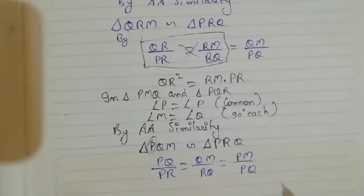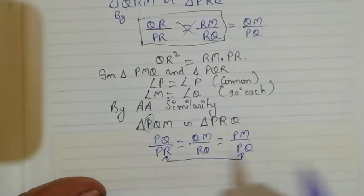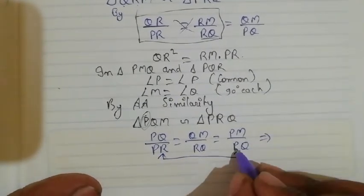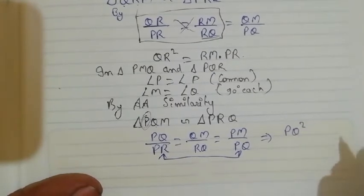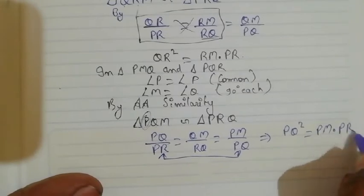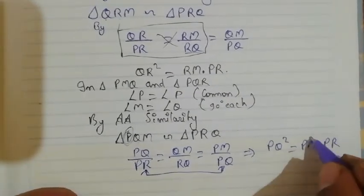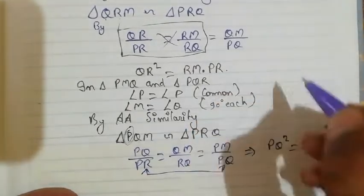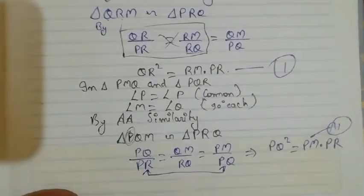Taking the first and last ratios together and doing cross multiplication, we get PQ² = PM × PR. We consider this as our second equation, and the previous result QR² = RM × PR as our first equation.